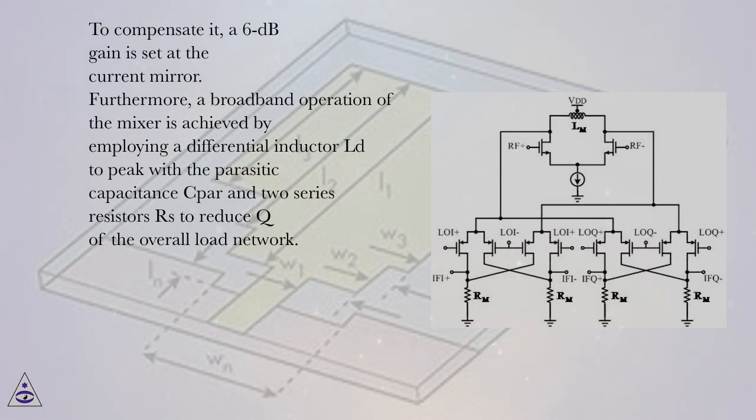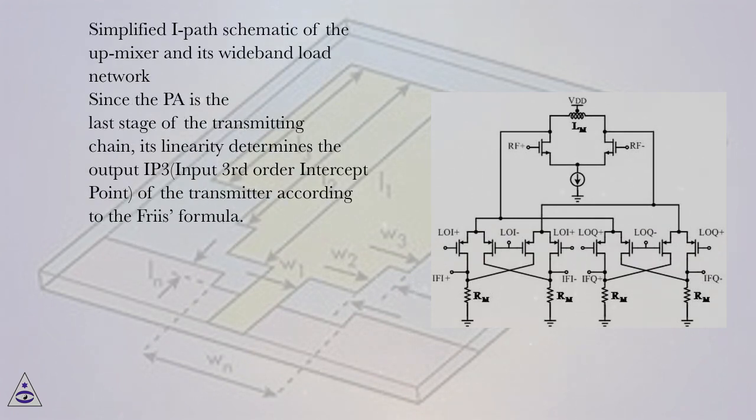Furthermore, a broadband operation of the mixer is achieved by employing a differential inductor LD to peak with a parasitic capacitance and two series resistors R's to reduce Q of the overall load network. Simplified I-path schematic of the up-mixer and its wideband load network.